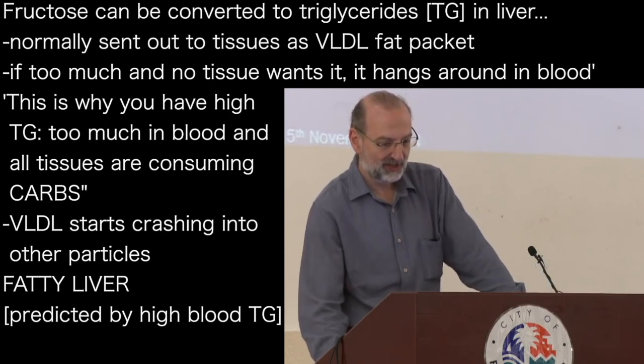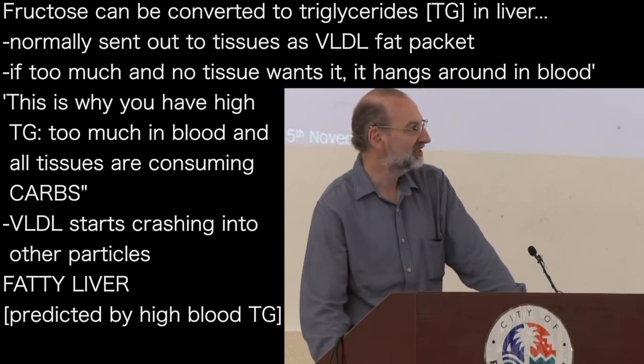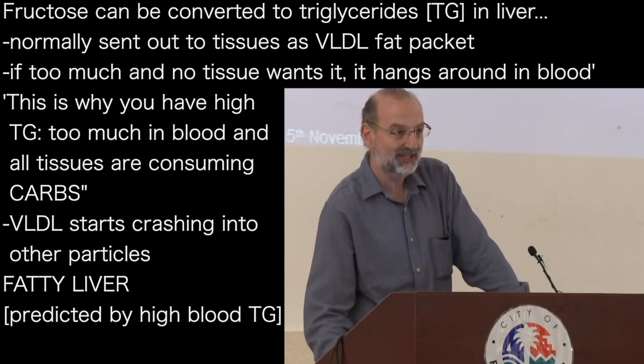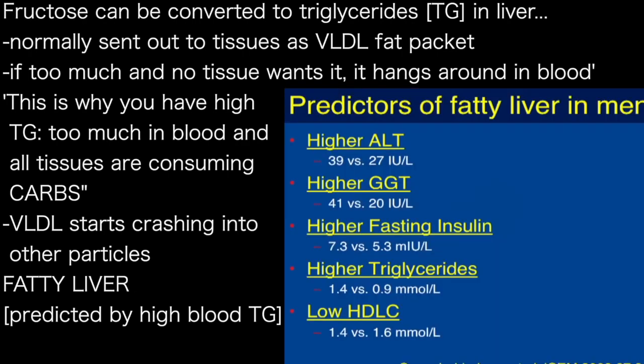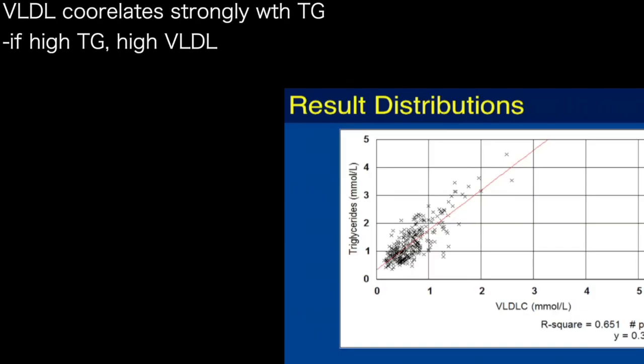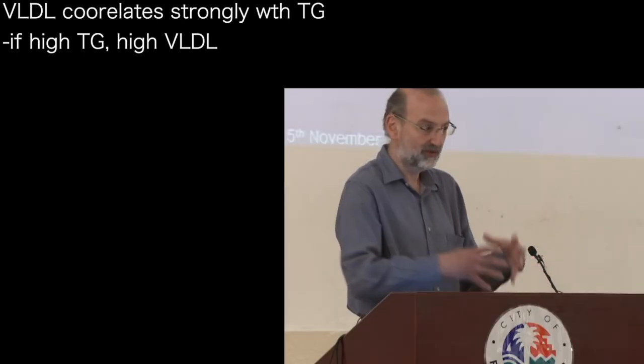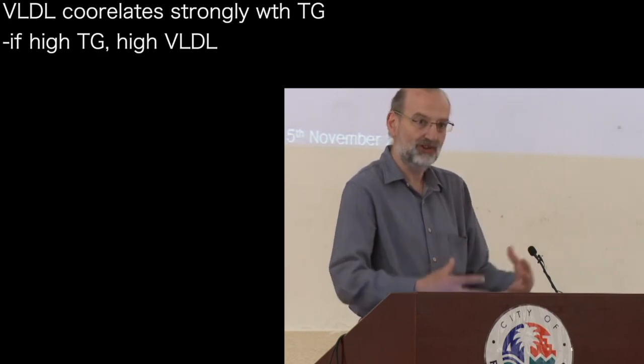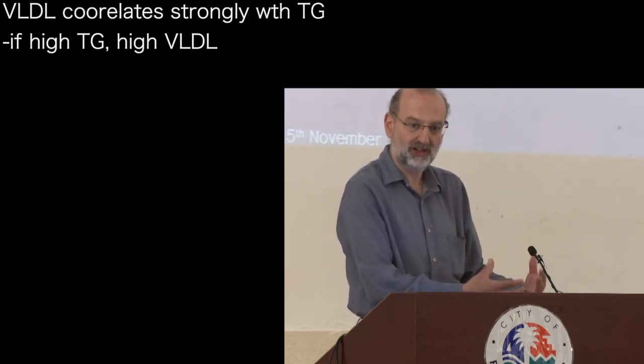So if this VLDL particle accumulates, it starts crashing into the other particles. First of all, fatty liver. So what predicts fatty liver? High levels of triglyceride. VLDL correlates with triglycerides, so when I talk about this VLDL particle, it means triglyceride. You can tell whether you've got a lot of VLDL being made and not used if you've got high triglyceride.